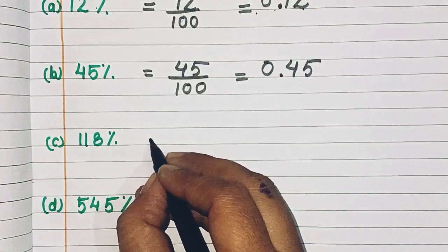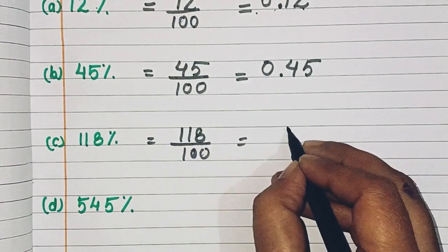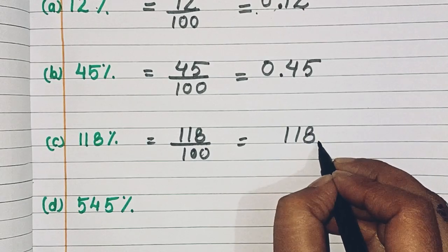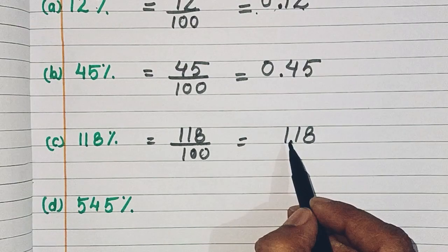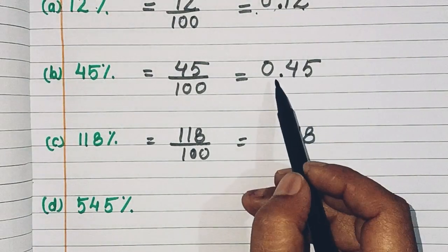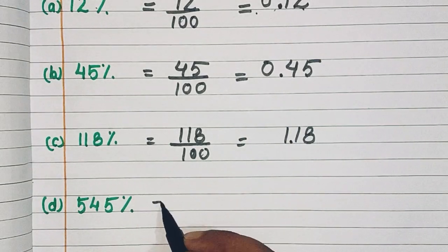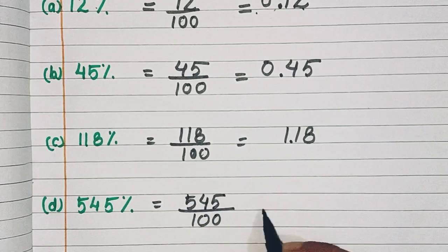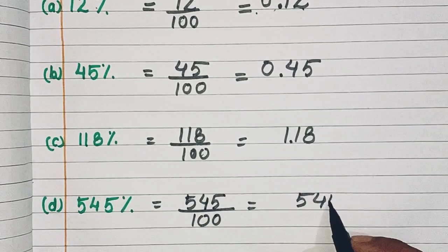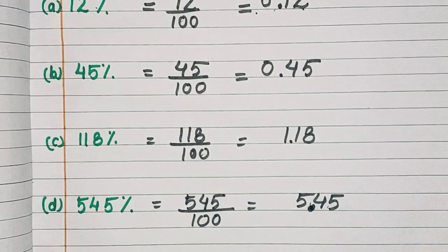Question number C: 118% becomes 118 upon 100. Here the decimal moves — 1, 2 places — giving 1.18. Then we have 545% which becomes 545 upon 100, giving 5.45.